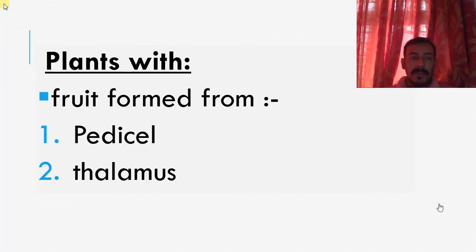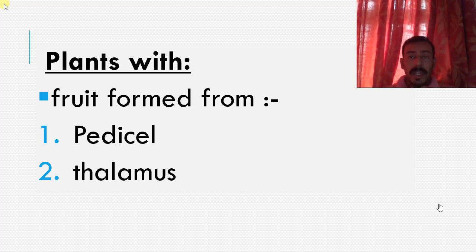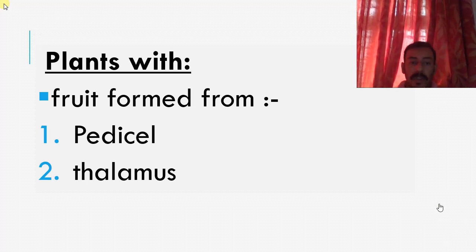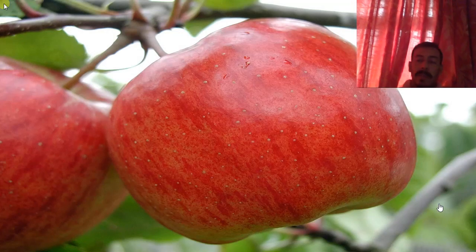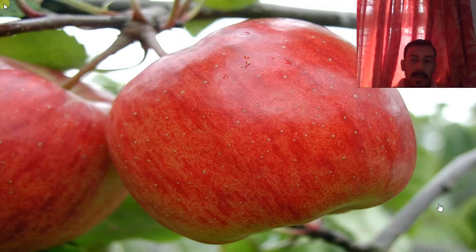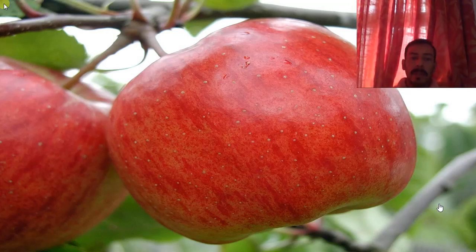Next is the last one, false fruits. So here the fruits are formed from plant parts which are not usually the ovary. In most cases, it is the ovary which forms the fruit. Here it is a pedicel or thalamus like situation. So this is an example which is the apple. You may or may not recognize it from the picture.